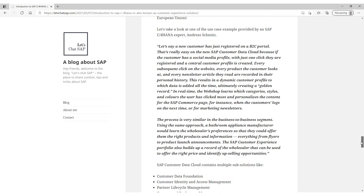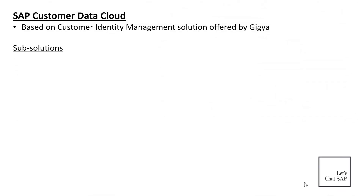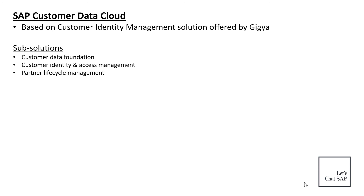Customer Data Cloud contains four sub-solutions offering different functionalities: customer data foundation, customer identity and access management, partner lifecycle management, and consent and preference management. These solutions help companies build trusted and valued relationships with their customers — essentially helping them turn unknown online website visitors into known, loyal customers.